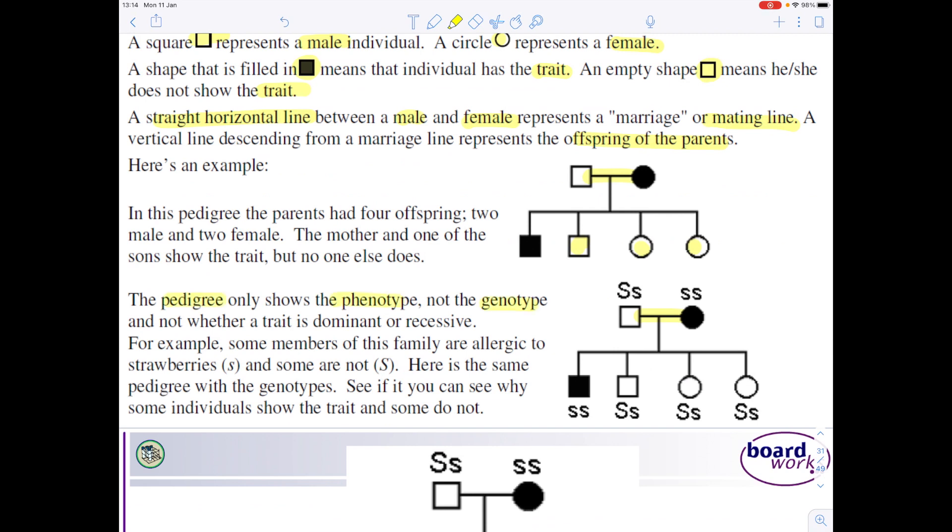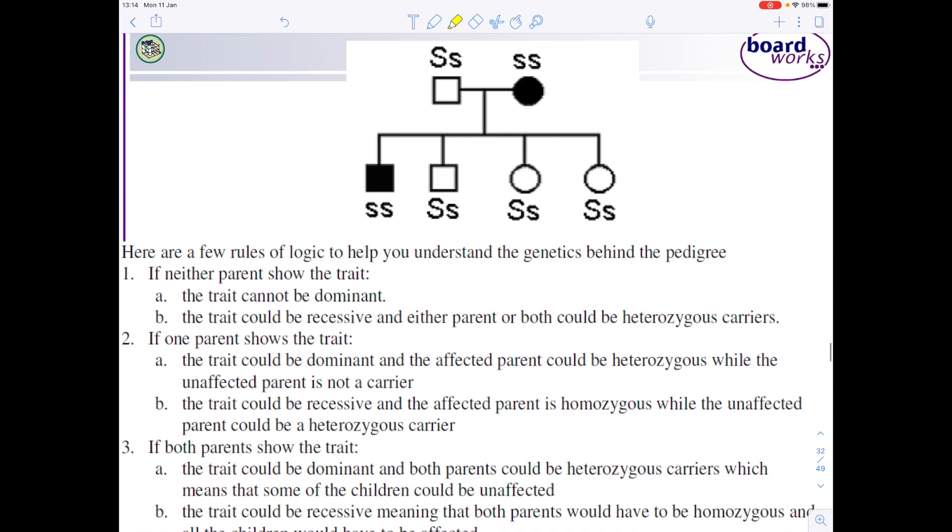So we're looking at the trait. Here's a few extra points - there's a few rules of logic to help you understand the genetics. If neither parent shows the traits, then the trait by definition can't be dominant, and therefore we can infer that the trait could be recessive and that either parent or potentially both could be heterozygous carriers.